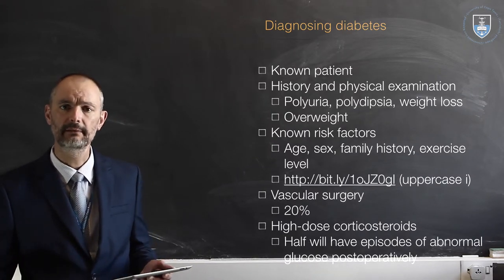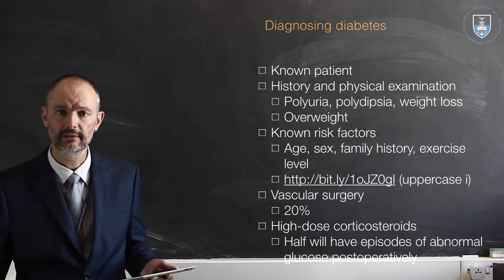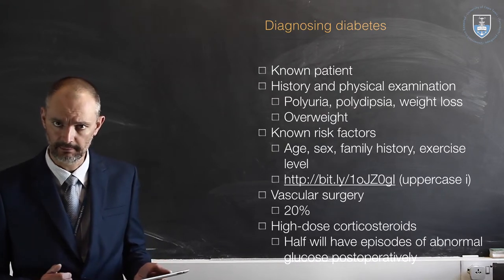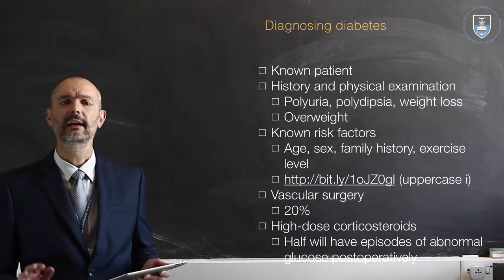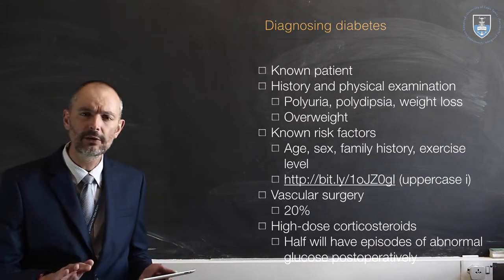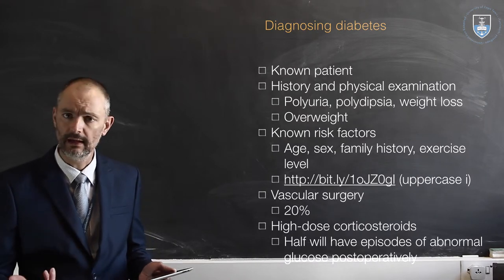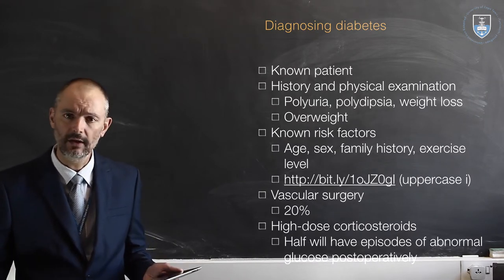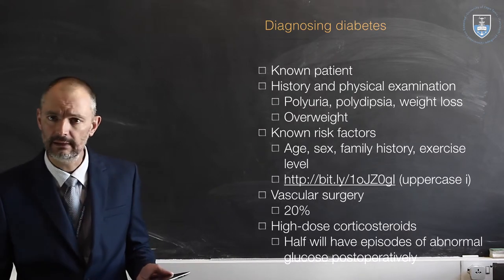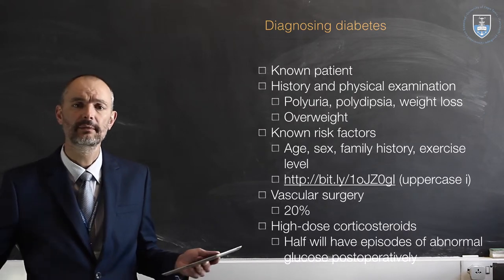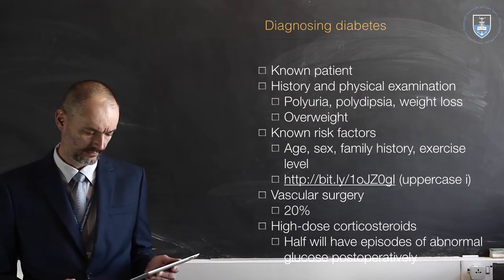Some institutions, when patients come in for first consultation, may get urinalysis and you might pick that up on the dipsticks. It's important to listen for polyuria — where they urinate a lot — polydipsia, where they are thirsty all the time and want to drink a lot, and weight loss. These might be indicative of type 1 diabetes. Always be careful with overweight patients, as they are at high risk for type 2 diabetes.